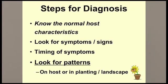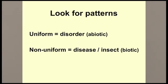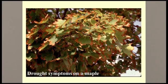The next key step in diagnosing plant problems is looking for any pattern to the symptoms. In general, if there's a uniform pattern to the symptoms, the problem is most likely a disorder caused by non-living factors — late spring frost and drought are two examples. If the pattern is not uniform, not the same on every leaf or plant, the problem is most likely due to a disease or insect. In this photo, every maple leaf has nearly the same degree of browning along the margin — a typical symptom associated with drought or sometimes high salt content in the soil. Pathogens would not produce symptoms this uniform.